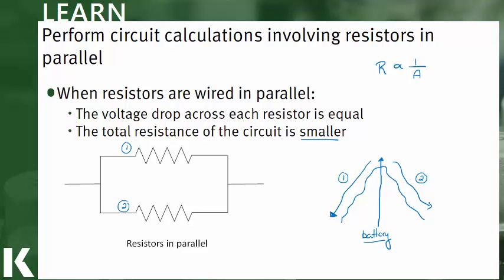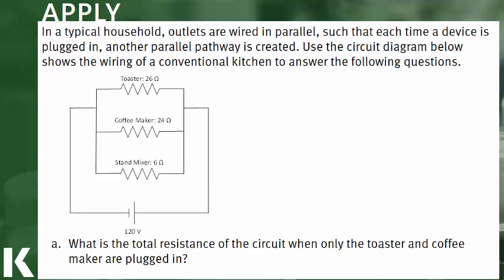Let's apply this with some practice questions. In a typical household, outlets are wired in parallel such that each time a device is plugged in, another parallel pathway is created. Use the circuit diagram below, which shows the wiring of a conventional kitchen, to answer the following questions. Looking at our diagram, we have three different things that can be plugged in: a toaster, a coffee maker, and a stand mixer. Part A asks us: what is the total resistance of the circuit when only the toaster and the coffee maker are plugged in?